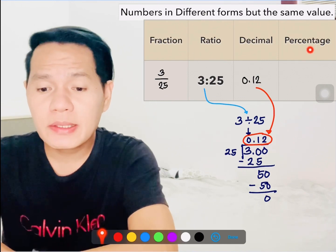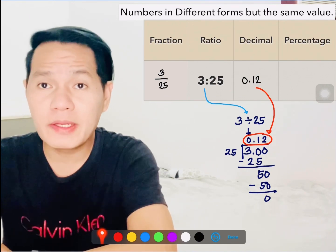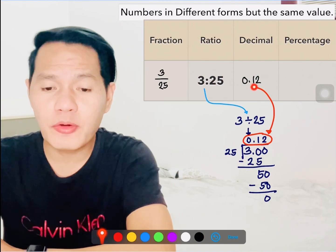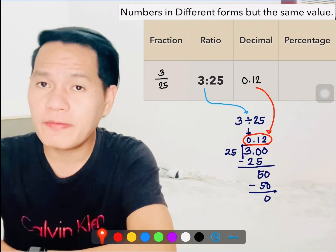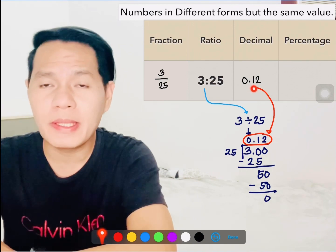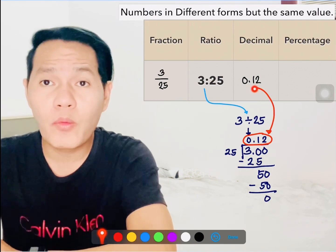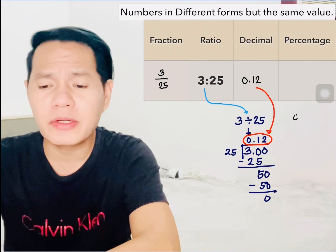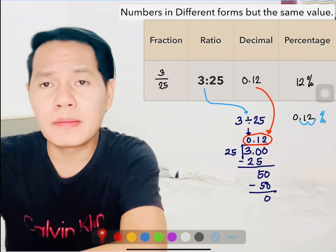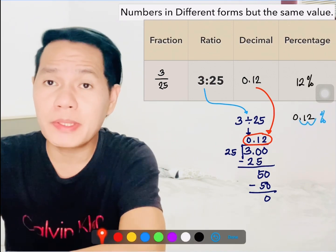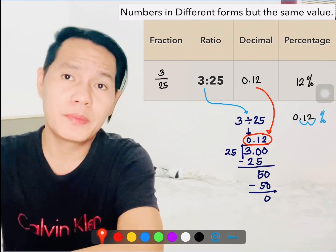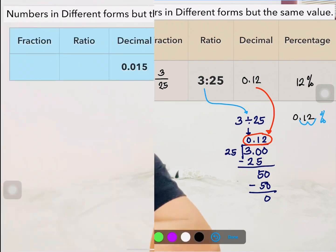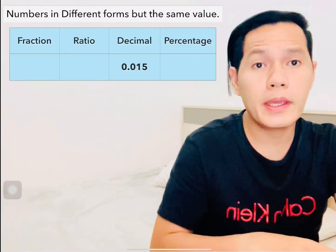We already have the decimal of 3 to 25, which is 0.12. So just simply multiply by 100, or move the decimal point to the right two times, and then put the percent symbol. Okay, that's it.